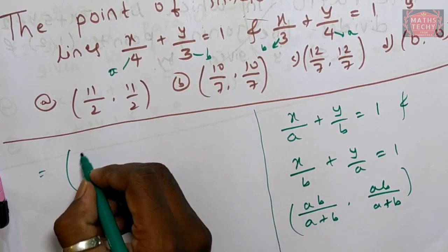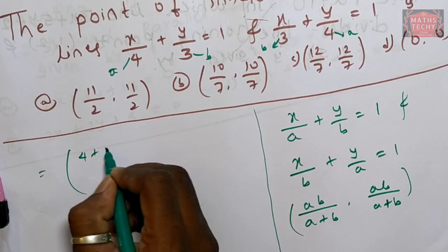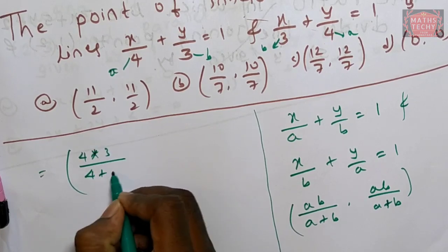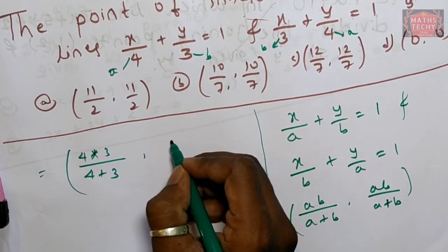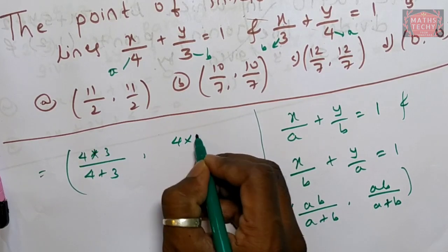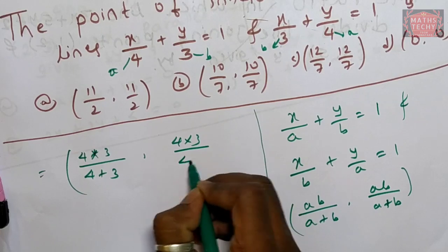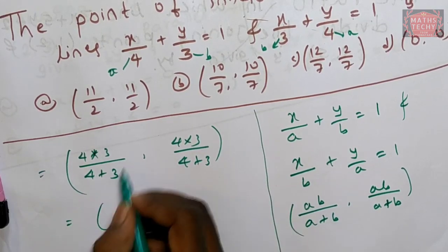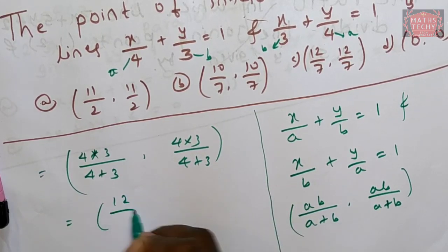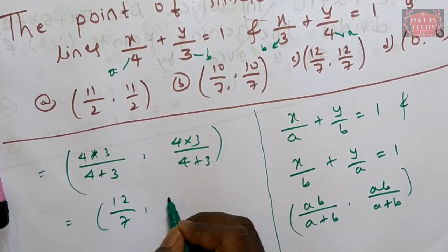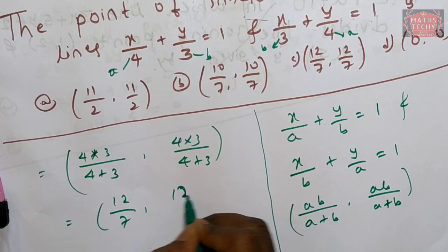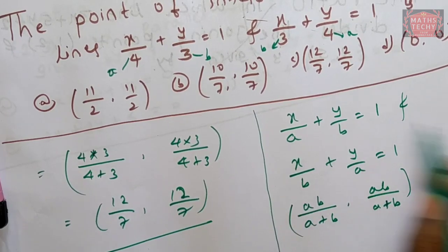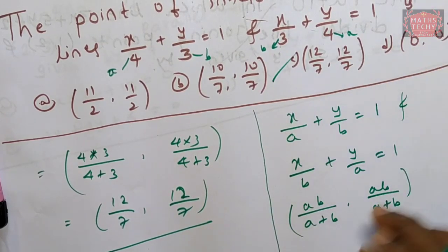We get four into three divided by four plus three, and four into three divided by four plus three. That is twelve divided by seven, and twelve divided by seven. So option C is correct.